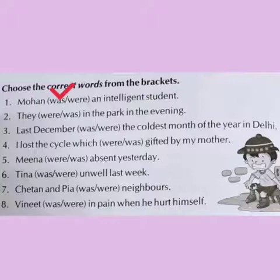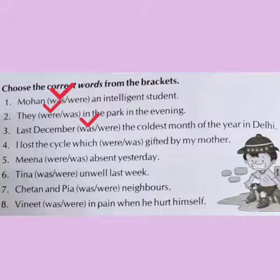Next: They were or was in the park in the evening. Here subject is they — they is a plural subject, so we will use were. They were in the park in the evening. Next: Last December — was or were — the coldest month of the year in Delhi. The subject is December, which is singular. So we will use was. Last December was the coldest month of the year in Delhi.